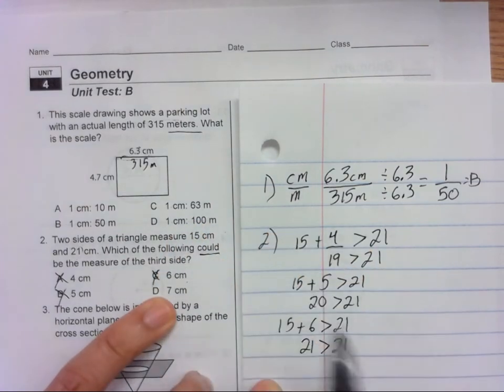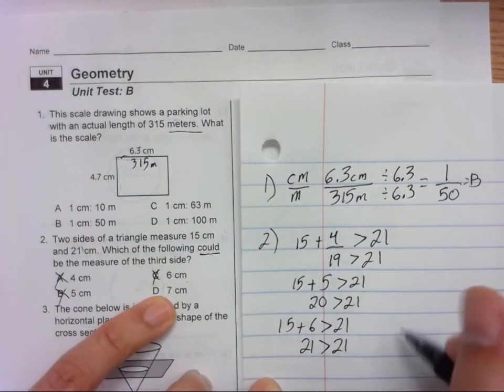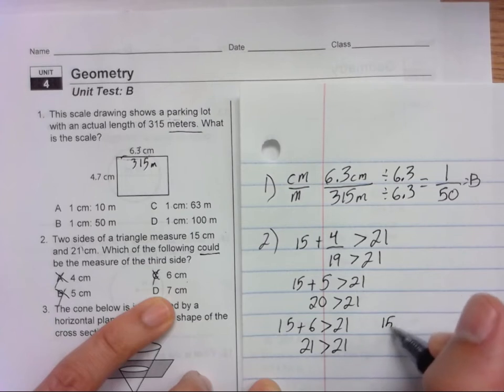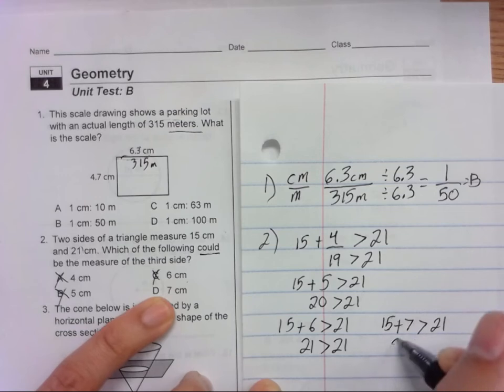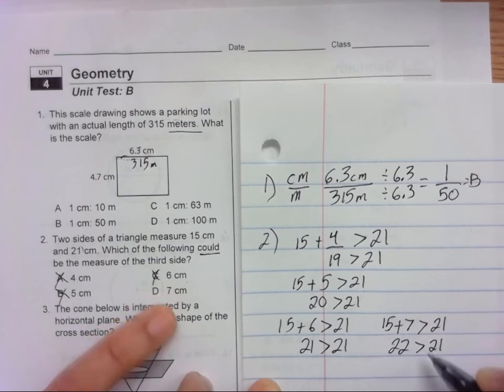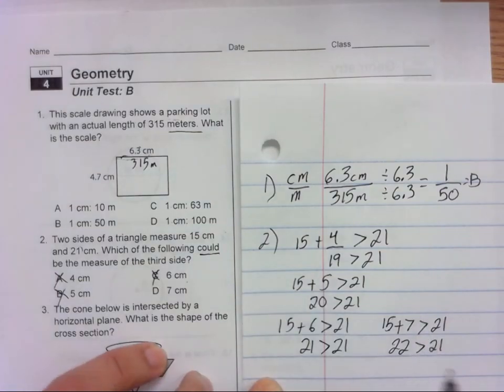So I'm guessing it's D, but let's check anyway. That would be 15 plus 7 has to be greater than 21. 15 plus 7 is 22. Is 22 greater than 21? Yes, it is. So the answer to number 2 is D.